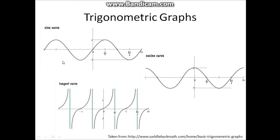But you have to know how to draw these graphs first. The sine graph and the cosine curve both look similar but they are different. The sine curve starts from zero while the cosine curve starts from one. These two are pretty similar because they look the same, but they don't act the same — they only look the same.